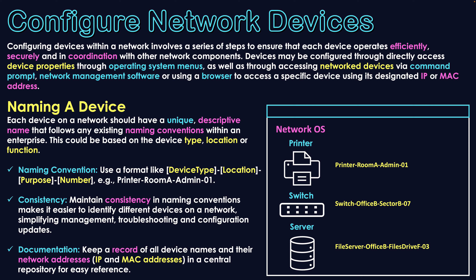The first step we'll start off with is naming a device. Each device on a network should have a unique descriptive name that follows an existing naming convention within an enterprise. This naming convention should be based on what the device type is, its location within the building structure of the enterprise, or perhaps what its function is. We then make a specific name based on those characteristics, and the way we order those naming components will be consistent for all devices.